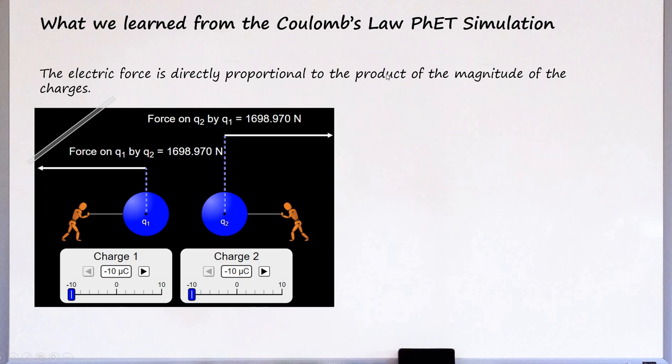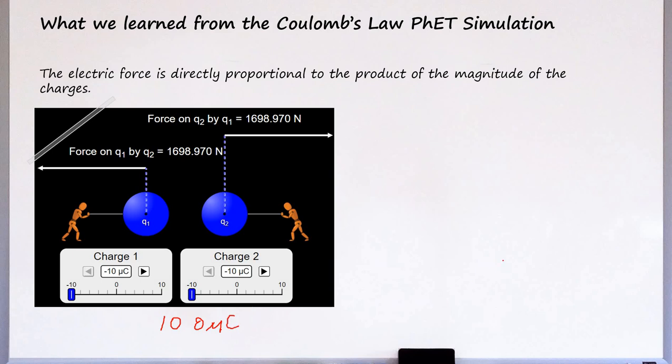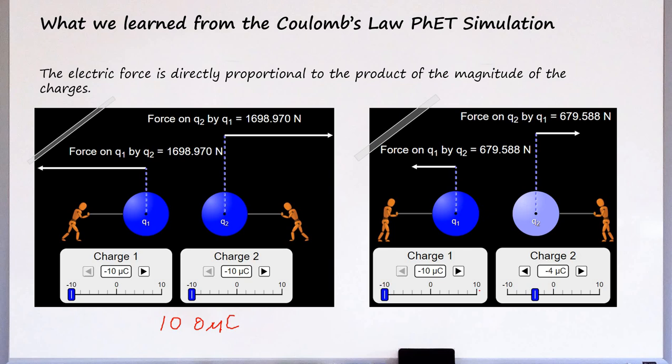So the product, according to what we learned here, the product of the magnitude of the charges is 10 times 10, which equals 100 microcoulombs. So here the product is 100. Just keep that in mind. Here in this other example, look, the product is 40. So which situation has the bigger product? Of course the first picture. And as you can see the force between both charges is also much bigger here compared to here, only 679. So therefore, the bigger the product, the bigger the force between both objects.